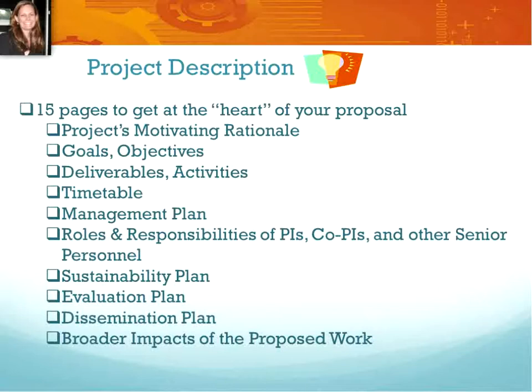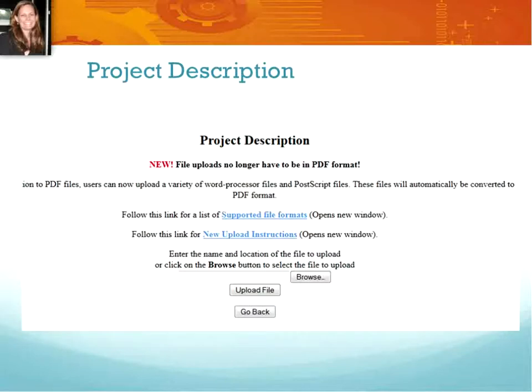The project description must also include a management plan, roles and responsibilities of PIs, co-PIs, and other senior personnel, sustainability plan, evaluation plan, dissemination plan, and broader impacts of the proposed work — all within the glorious 15-page limit. It sounds daunting, but it's very doable. When looking at your project description, you'll want to address intellectual merit and broader impacts. In this new Grant Proposal Guide, you actually need to include a section entitled 'Broader Impacts of the Proposed Work.' Some examples of things you might include: outcomes reaching women and underrepresented minorities in STEM, improving STEM education at a particular level, or increasing partnerships with business and industry.